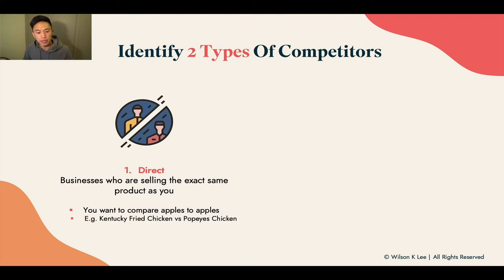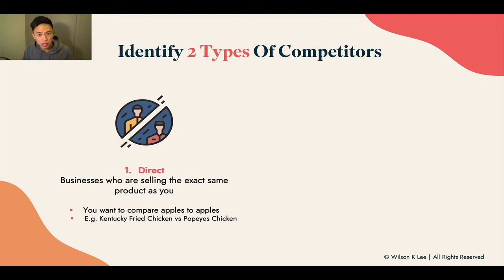So for KFC, they compare themselves with Popeyes. For Wilson's Cookies, I'd be comparing with other cookie businesses within my area to see how I can stand out — whether I'll be serving specifically fruit cookies, something with a twist: strawberry white chocolate flavored cookies, blueberry dark chocolate, and all these flavors specifically using fruits. That is my way of standing out. I'm just sharing the principle of what makes someone stand out.